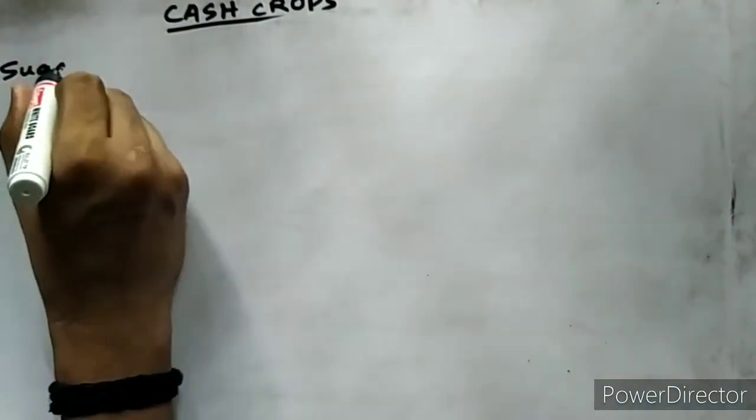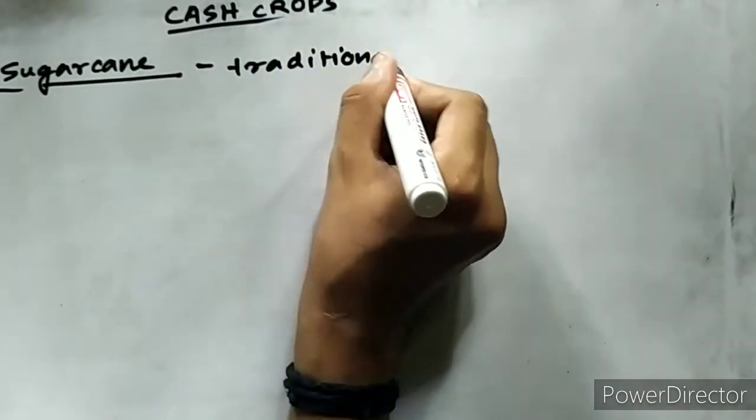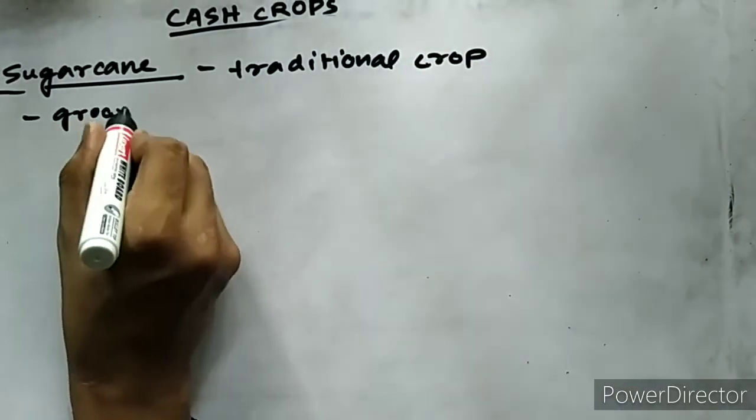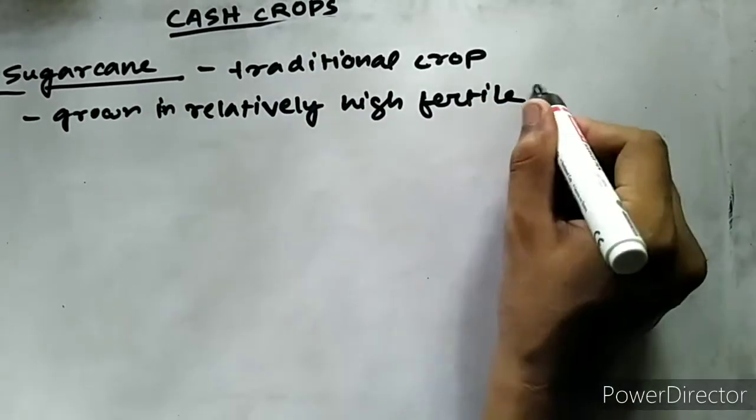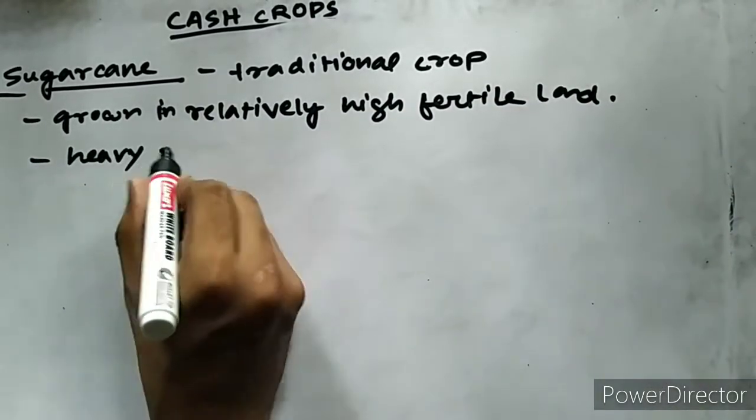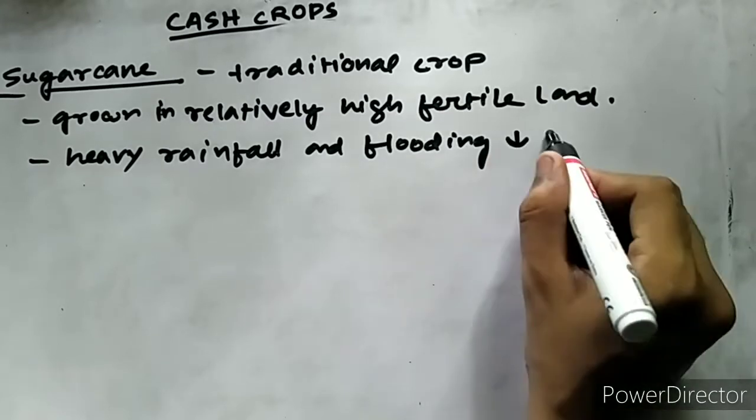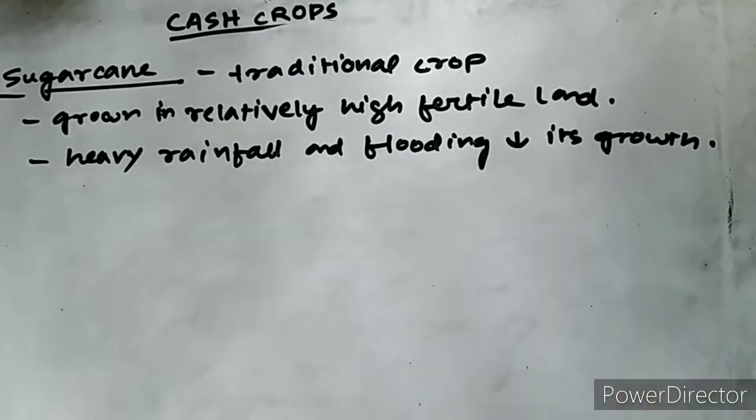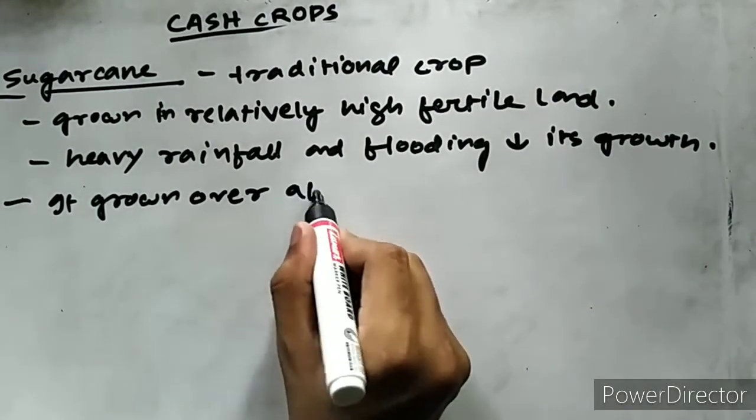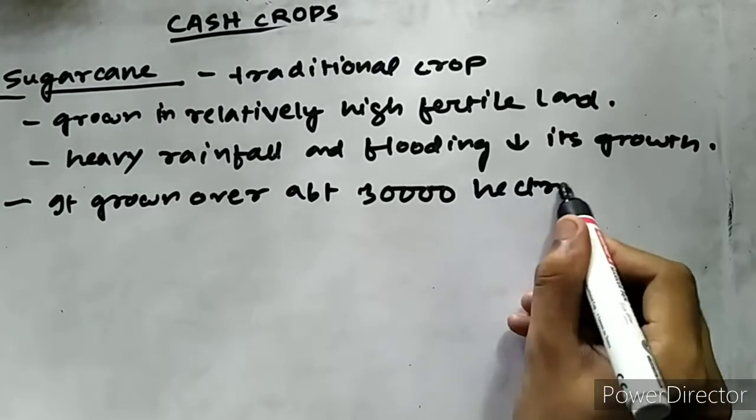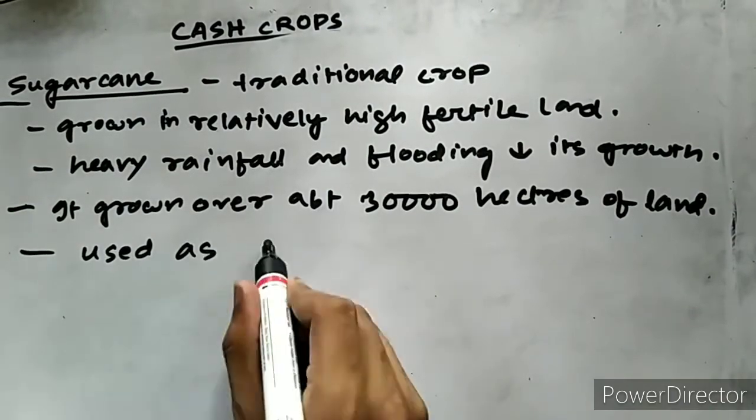Let us discuss about sugarcane. Sugarcane is an important traditional crop of Assam. It is grown in relatively high and fertile flat ground. But heavy rainfall and flooding often limits its growth. However, the crop is grown over about 30,000 hectares of land in Assam, and it is mostly used to produce gur and molasses for domestic use.